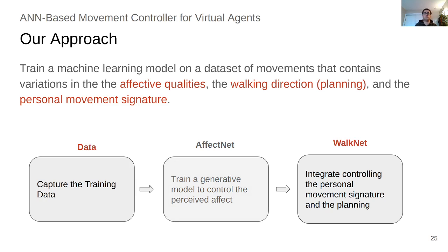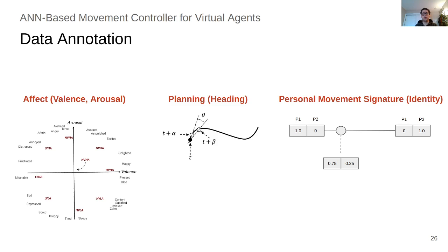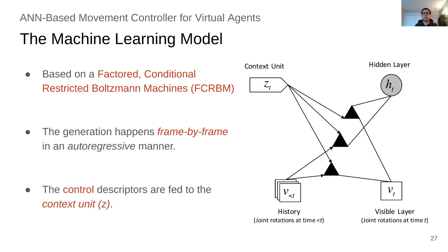Since this is iterative work, we are going to talk about the data and WalkNet. To train the model, we annotate the training data based on the valence and arousal levels, allowing a two-dimensional continuous space. For planning, we annotated the heading direction of the movement character, and we annotated based on the identity of the mover as a representation of personal movement signature. For the machine learning model, we use a factored conditional restricted Boltzmann machine, or FCRBM. The model works by taking a window of previous frames and a set of control parameters, and it predicts the next movement frame. We specifically chose this model because of its special ability to modulate the behavior of the network by whatever information we pass to the context unit, which makes it very suitable for control problems.